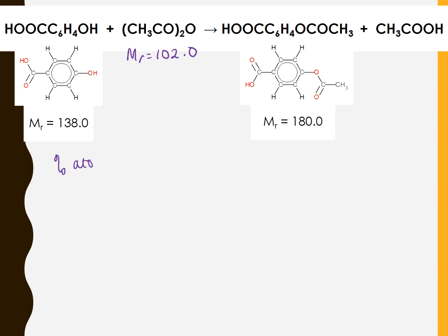In this example, the percentage atom economy would be equal to the MR of the aspirin, which is the required product, 180.0, divided by the total of all of the MRs of all of those starting materials. So in this case we've got one lot of 138.0 and one lot of 102.0. That's the fraction of the total mass of starting material which ends up in the mass of the desired product, then multiply that fraction by 100 for a percentage. So 180 divided by 138 plus 102, times by 100, gives us a 75.0% atom economy for this particular synthesis.